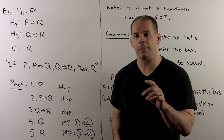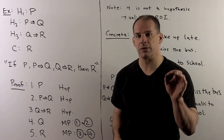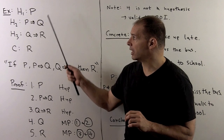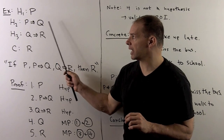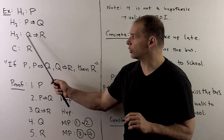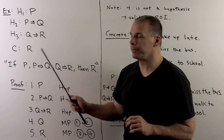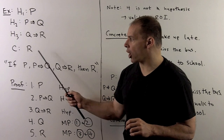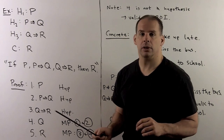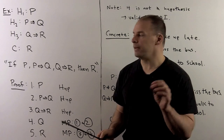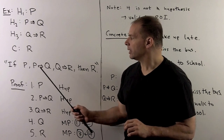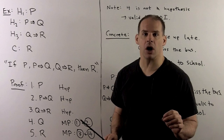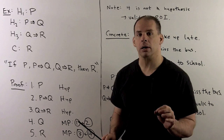For our first example, let's consider the theorem with hypotheses p, p implies q, and q implies r, and with conclusion statement r. So it says: if p, p implies q, and q implies r, then r.